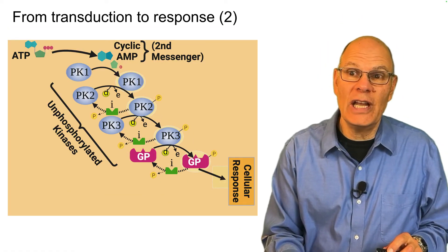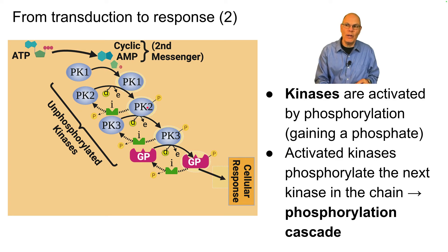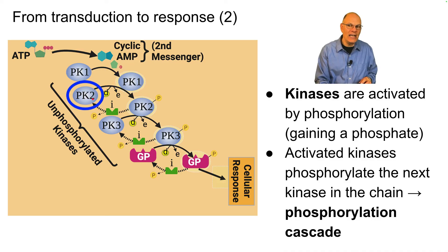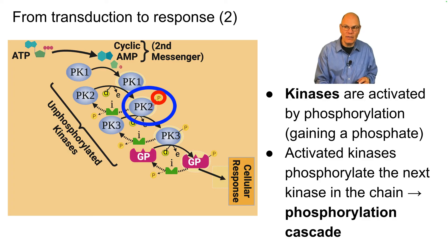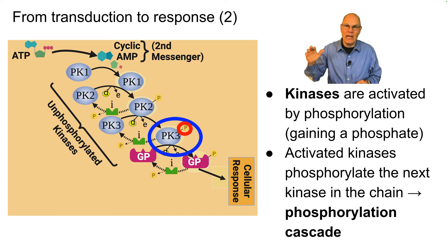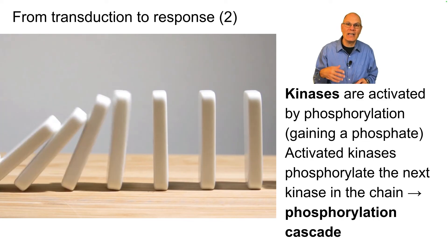How does that phosphorylation cascade work? The kinases are activated by phosphorylation — by gaining a phosphate. Once they're activated, they activate the next kinase in the chain. Protein kinase 1 acts upon protein kinase 2 by phosphorylating it, so now protein kinase 2 is active and phosphorylated. It then activates protein kinase 3 by phosphorylating it. There can be many more in this chain, and we get this domino-like effect of one kinase activating the next.